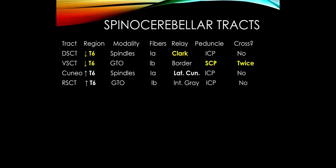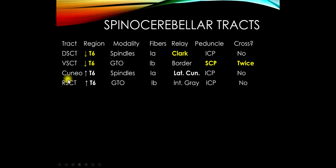Now let's talk about the inputs to the cerebellum. Every movement activates either muscle spindles or Golgi tendon organs — that is the input the cerebellum receives. Below T6, it's the dorsal and the ventral spinocerebellar tracts. Above T6, the names are the cuneocerebellar tract and the rostral spinocerebellar tract — I won't ask you those. The relay nucleus you should know is Clark's nucleus, found from T1 to L2 in the thoracic cord, which is the relay nucleus for the dorsal spinocerebellar tract.